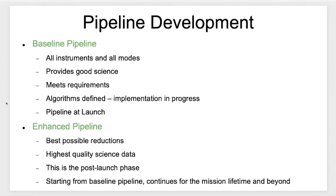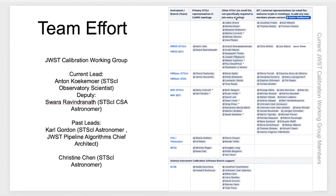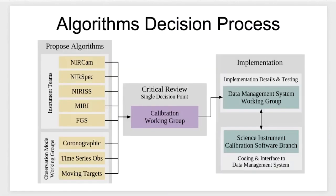A final couple of words on how we develop the pipeline. The baseline pipeline was aimed at producing usable science products meeting requirements — all the algorithms are defined — and that was our pipeline at launch. Now we're really in the enhanced phase, improving the pipeline and producing the best products we can, and this will continue for the life of the mission. We learn from past efforts — Hubble, Spitzer, rehearsal observations, and other instruments. There's a fairly large group involved: people from the institute, from external instrument teams, and anyone else who wants to contribute.